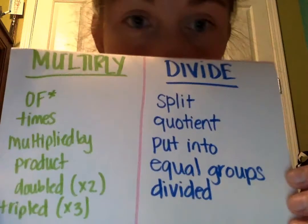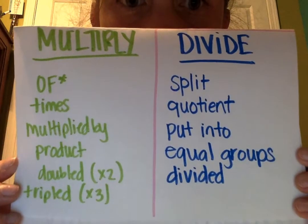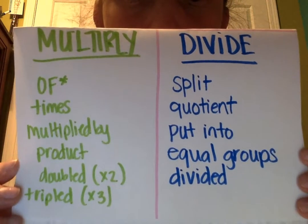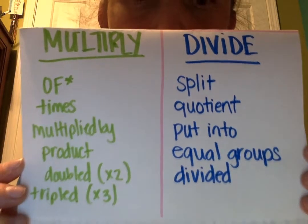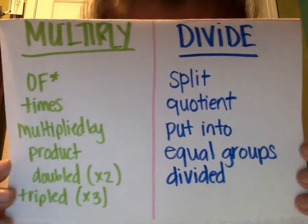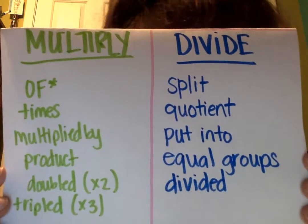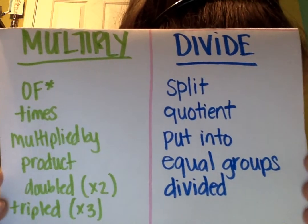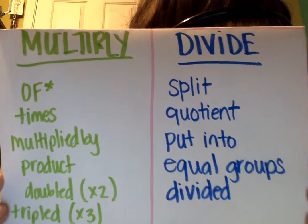For division, the key words are: split, quotient, put into, equal groups, or divided by. All of these things mean that we are dividing, and it typically means that we are getting smaller whenever we divide.